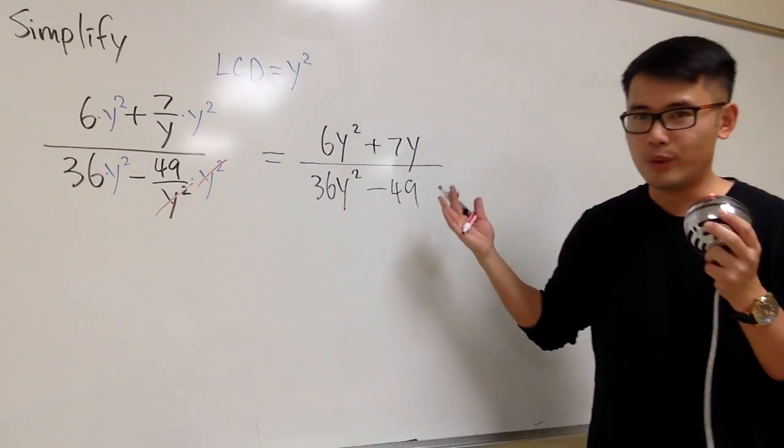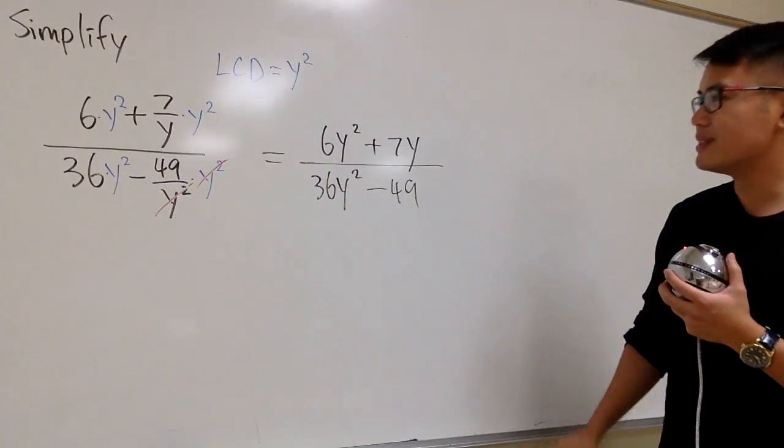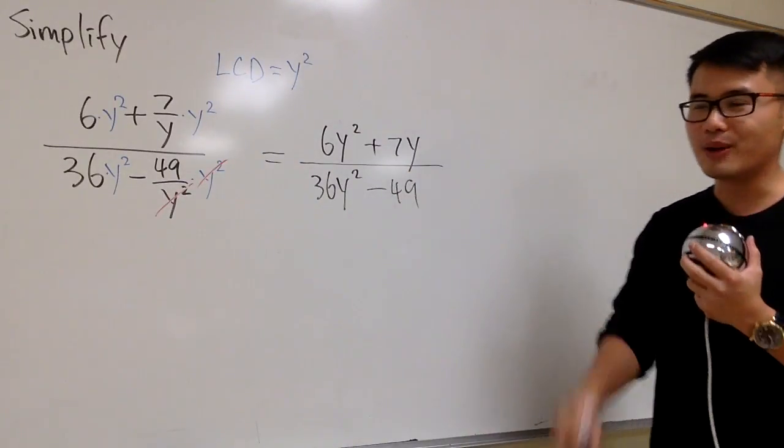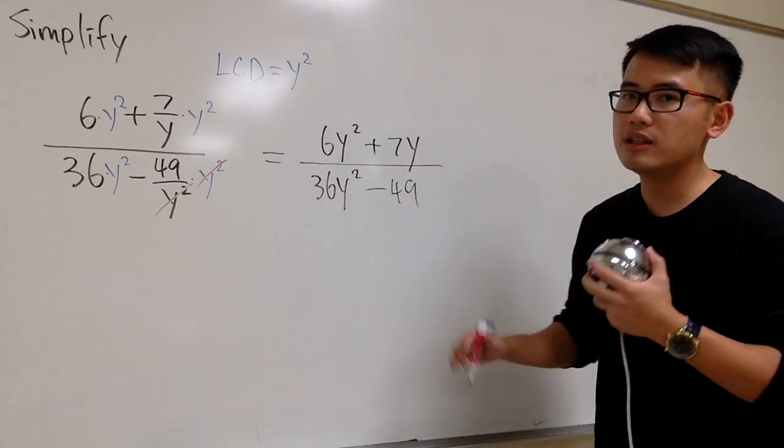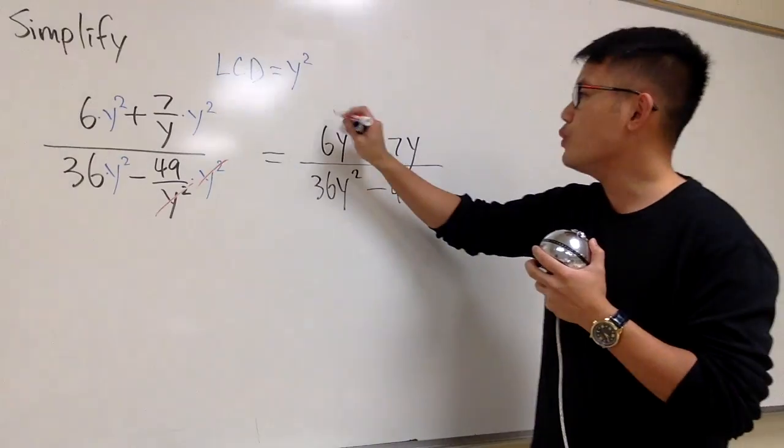And now what? Can we do more? Can we simplify this? Yes, because we can factor and cancel. On the top, you see, we have the y squared and the y, so we can first factor out the y. We will do that right here.